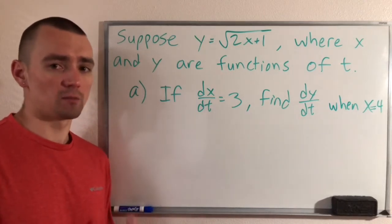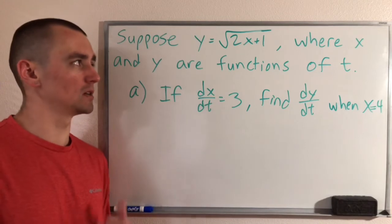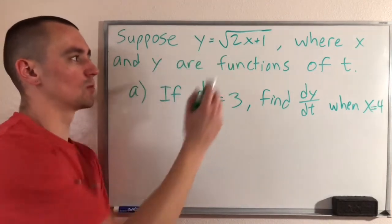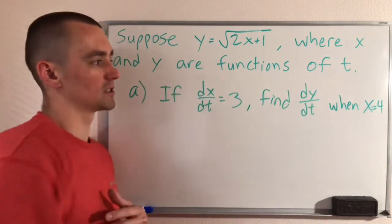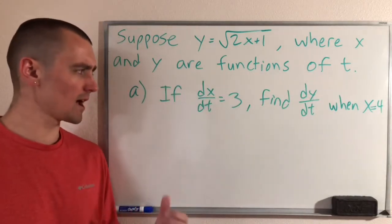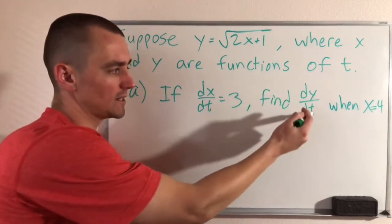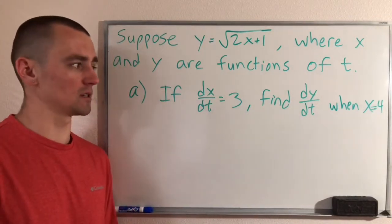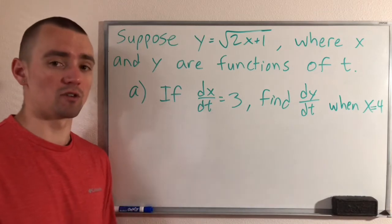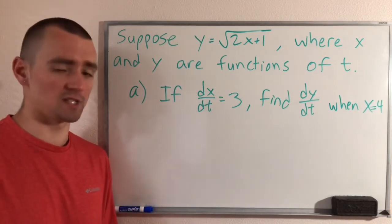This is a good example of an implicit differentiation problem because we're given this equation of x and y and we are told that x and y are both functions of t. Not only that, we are told to find dy/dt and since we have a dt down here, that pretty much tells us we're going to be taking the derivative with respect to time, or t.